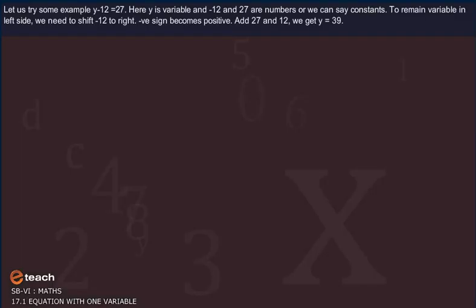Let us try some example. Y minus 12 is equal to 27. Here Y is variable and minus 12 and 27 are numbers or we can say constants. To remain variable in left side, we need to shift minus 12 to right. Now negative sign becomes positive. Add 27 and 12. We get Y is equal to 39.